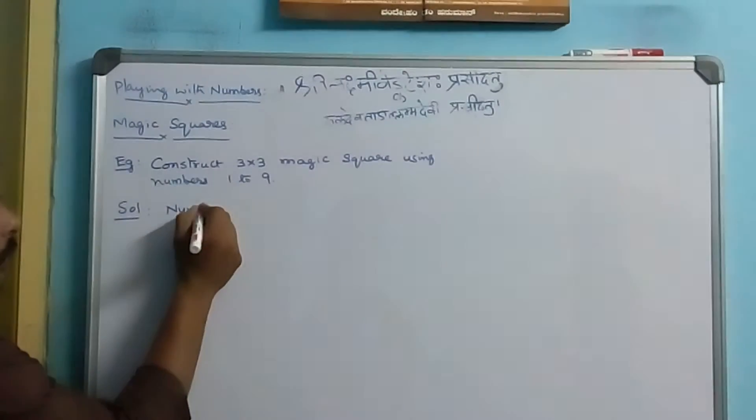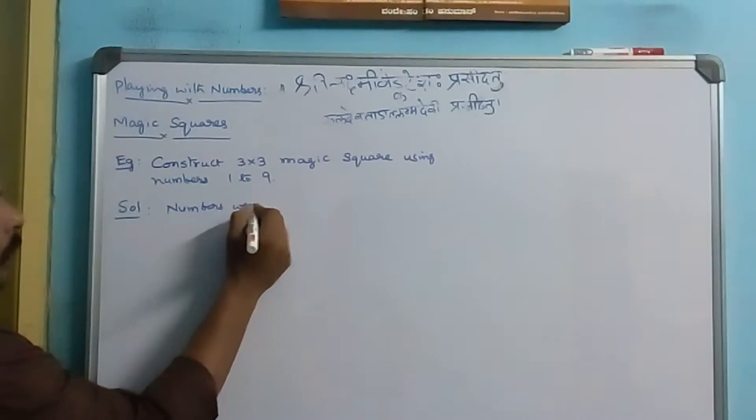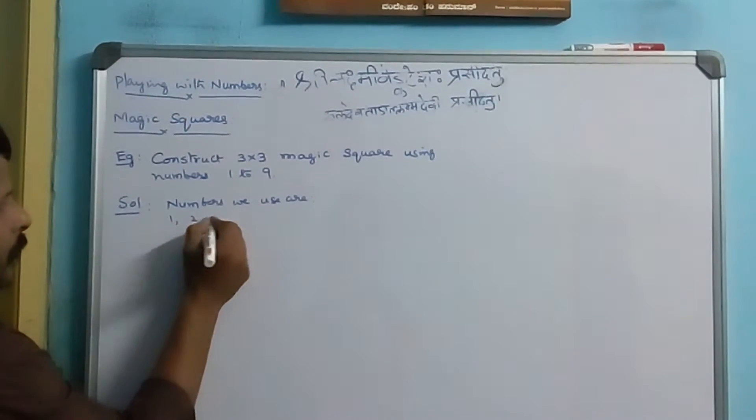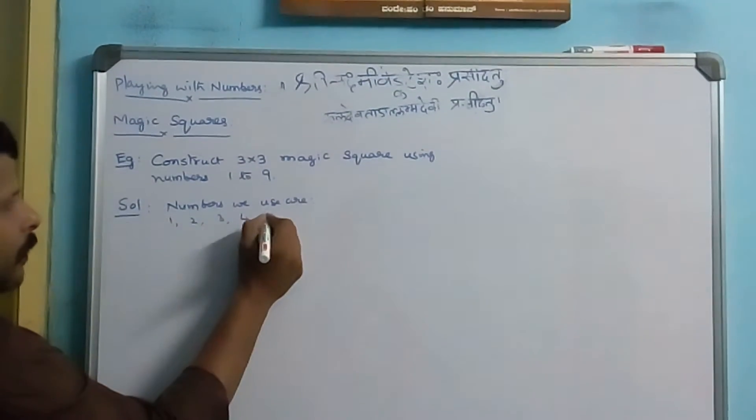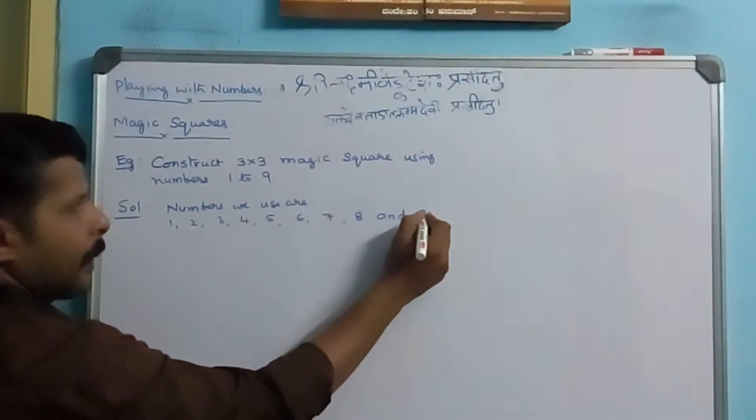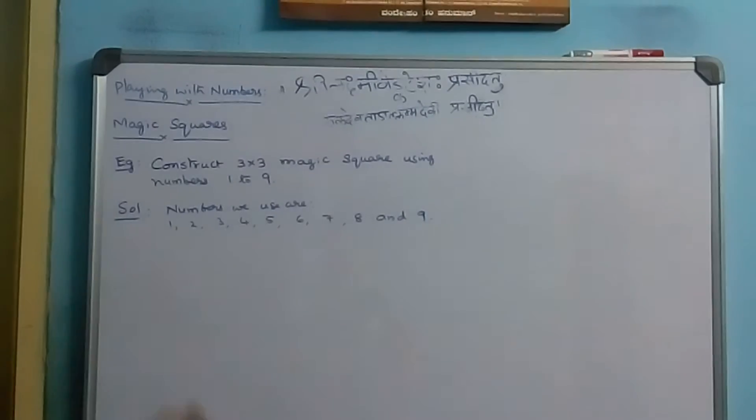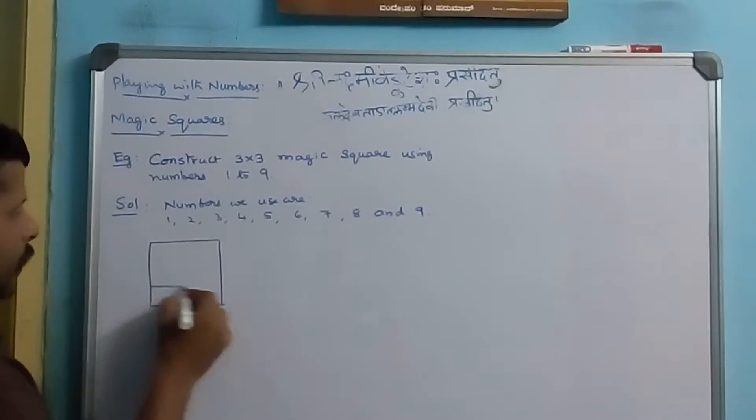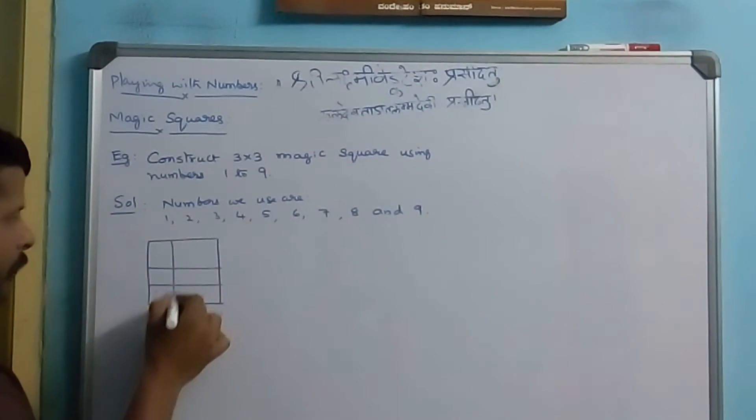numbers we use are 1, 2, 3, 4, 5, 6, 7, 8 and 9. So first, we will have a blank 3x3 square.